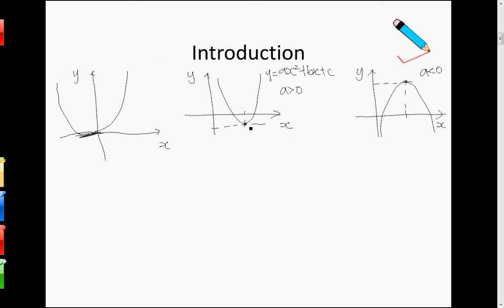In the past when we wanted to find this maximum point and minimum point, we could complete the square and find the maximum or minimum point. That's one way we can do it. The other way is using differentiation, which we are going to learn in this chapter.